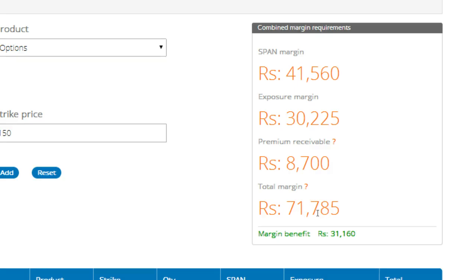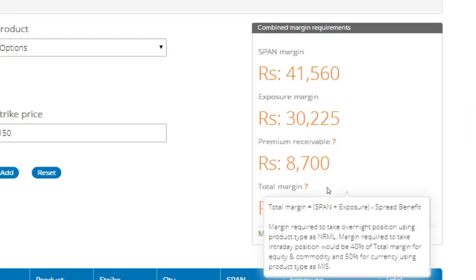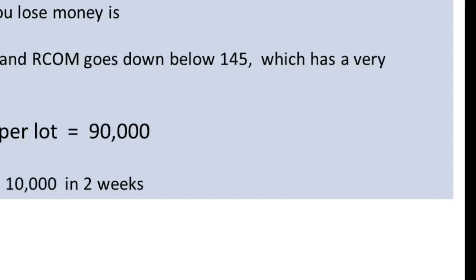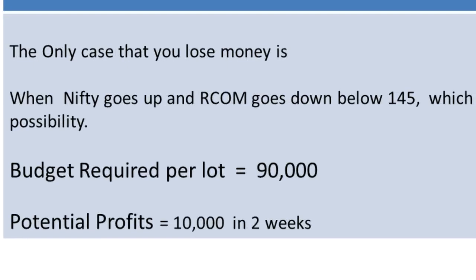Buying the Nifty put will require only 2,500 rupees. So the combined budget required is less than 75,000 rupees. The additional 10,000–15,000 is to be kept in cash for downside MTM just in case. So necessarily in most of these stock cases when trading based on Fibonacci, the expected budget is around 80,000–90,000 rupees and the expected profit is within one or two weeks. Sometimes you can continue to roll over for four weeks — when it's the first week of the month, the at-the-money call option can be trading at a premium of 15 to 20 rupees, increasing your profit potential significantly.